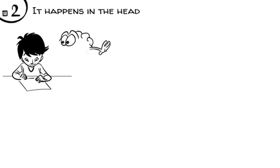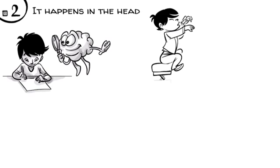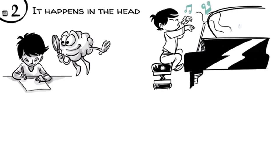It happens in the head. Whatever is on paper is merely a representation of mathematical thinking that happens in the brain, just like musical notes. What is on paper is just a representation of music that actually happens when someone plays the piano.